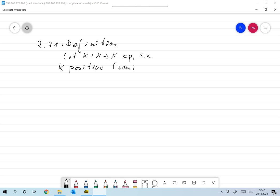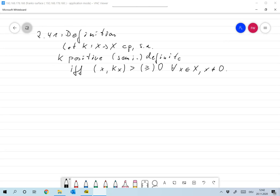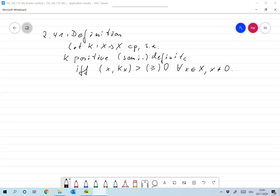...and that only for semi-definite, if and only if the scalar product of x and Kx is larger or for semi-definite larger or equal to 0 for all x in X and x not equal to 0. So when I say that an operator's positive semi-definite I always include automatically that it's self-adjoint.